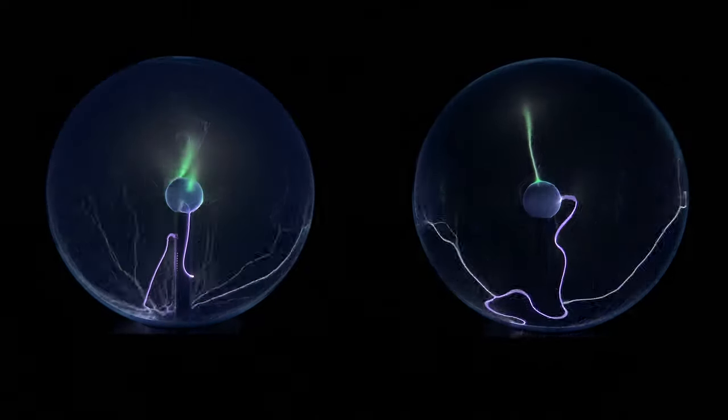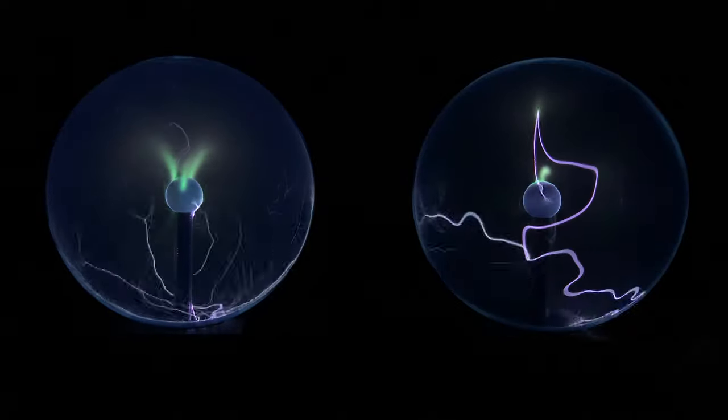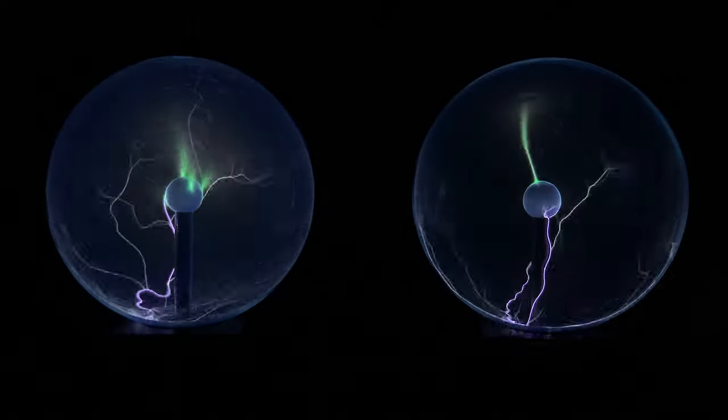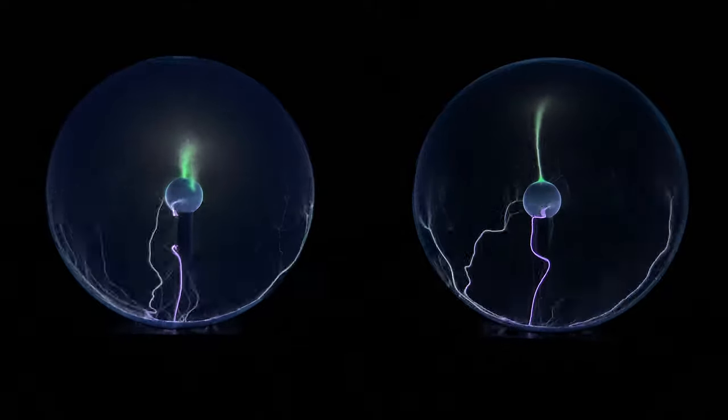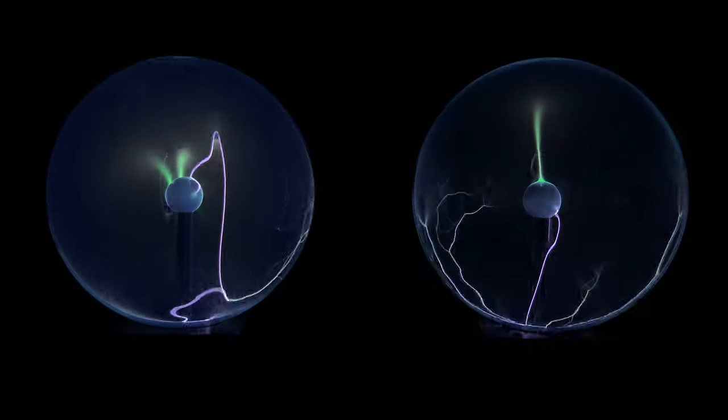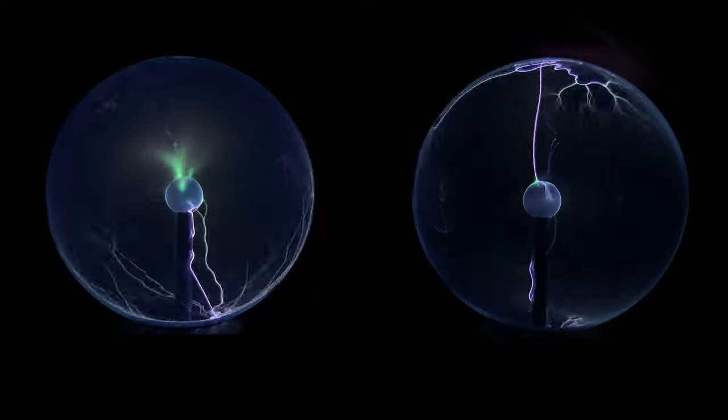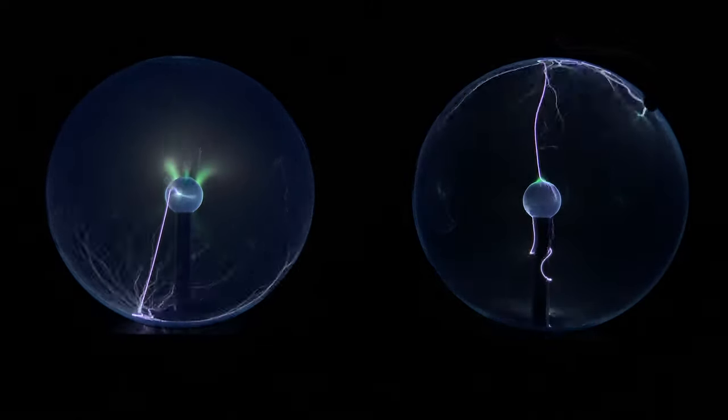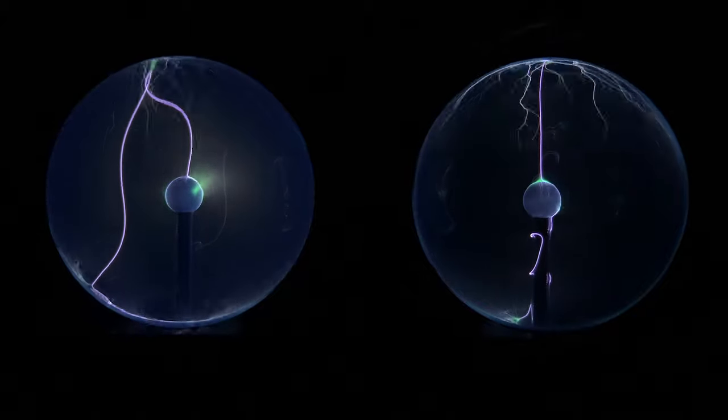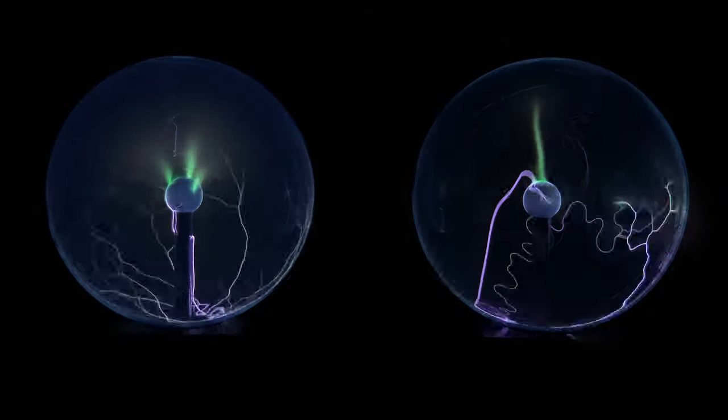Also, a very distinctive thing about these globes is all of these splashes of plasma down at the bottom of the base. And if you put your hand close to the surface, you get that same sort of splash that follows your hand around.